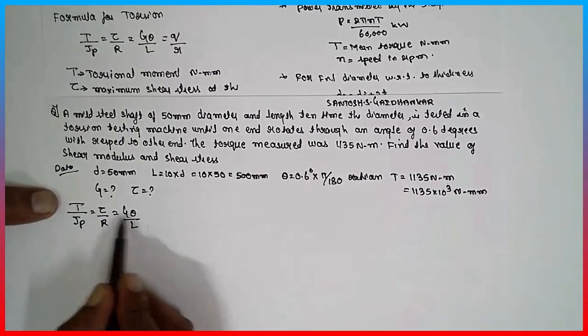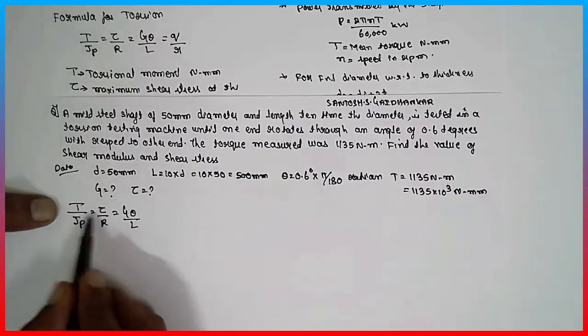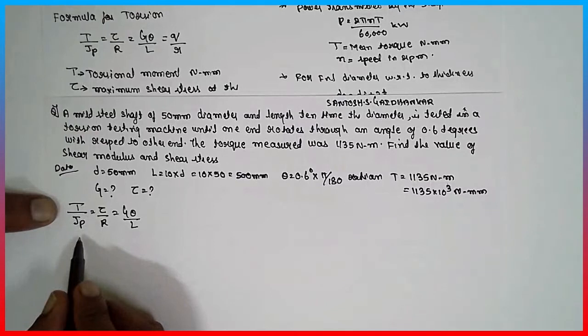We can't use these two combinations because tau is unknown, G is unknown. But T is given. First, I will go for these two combinations.